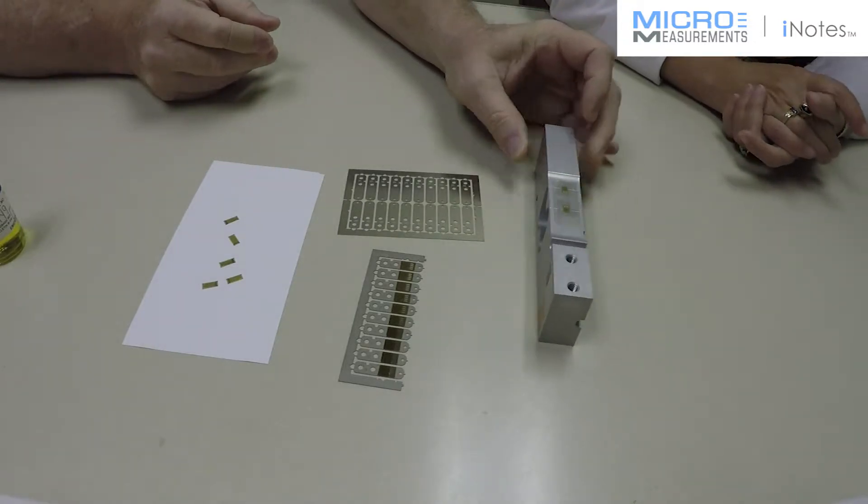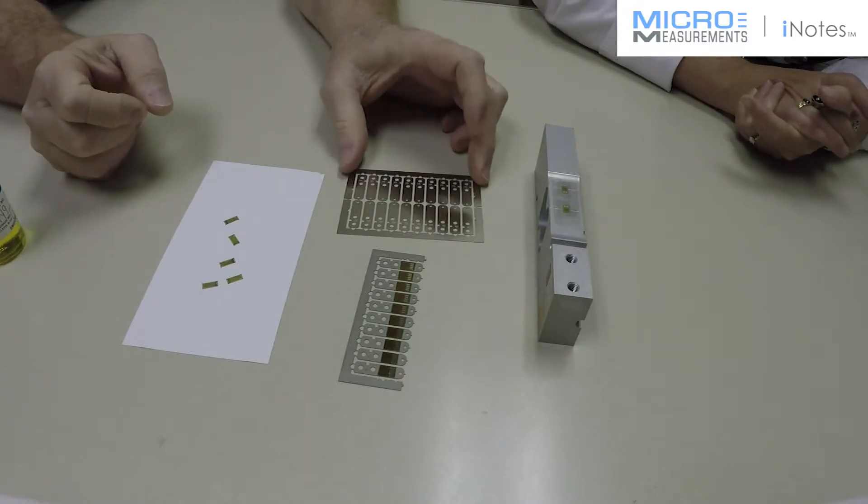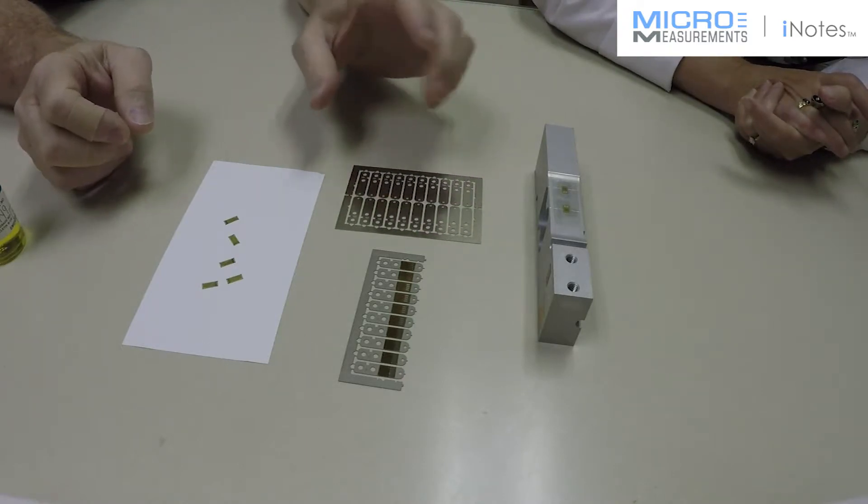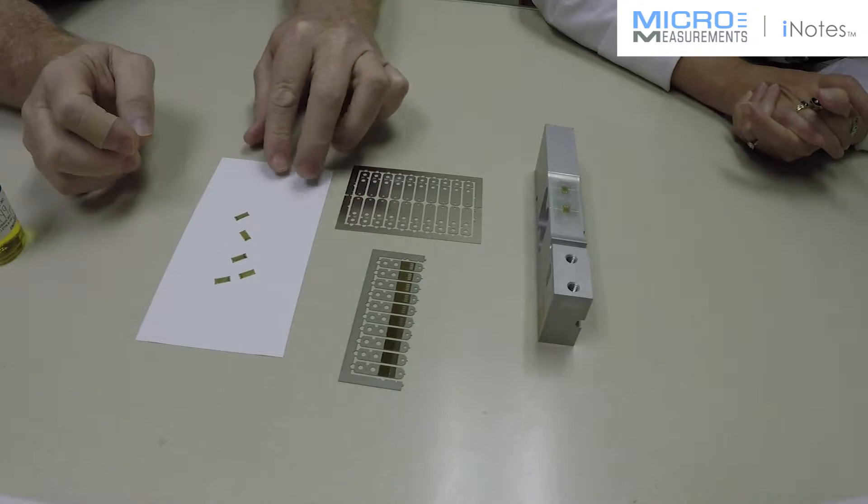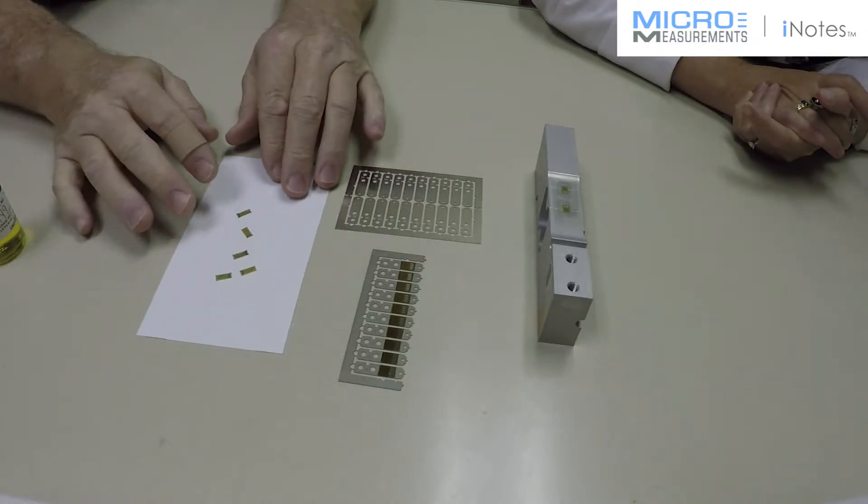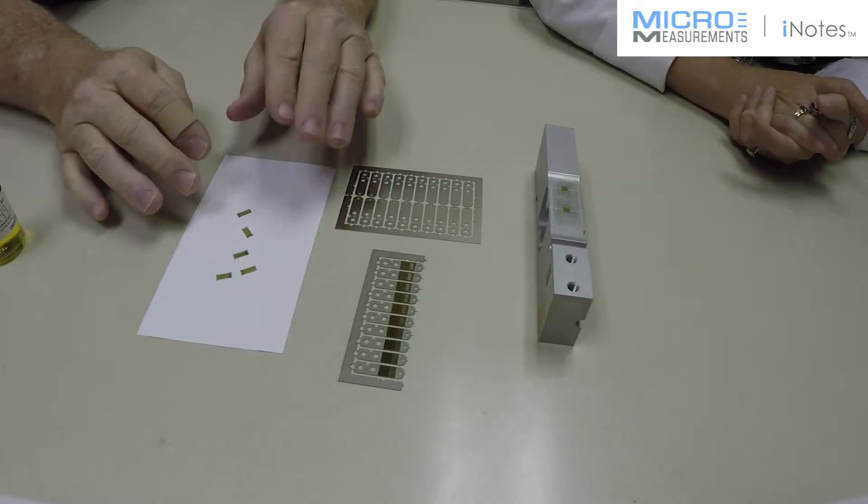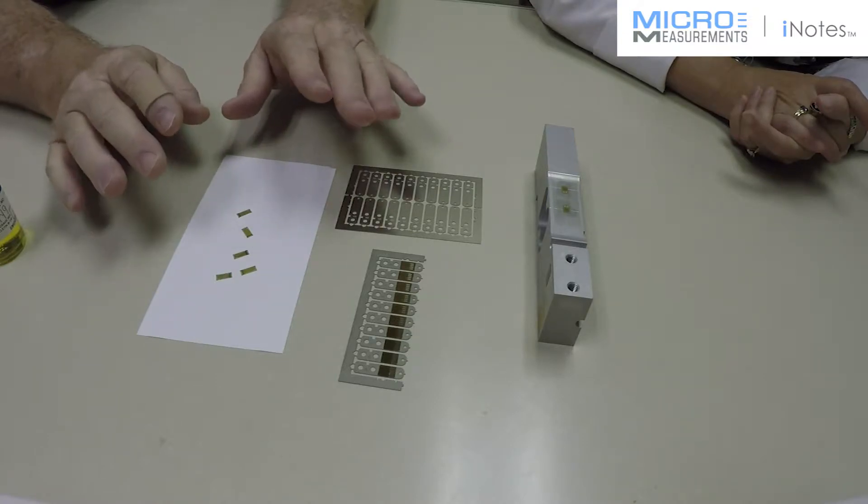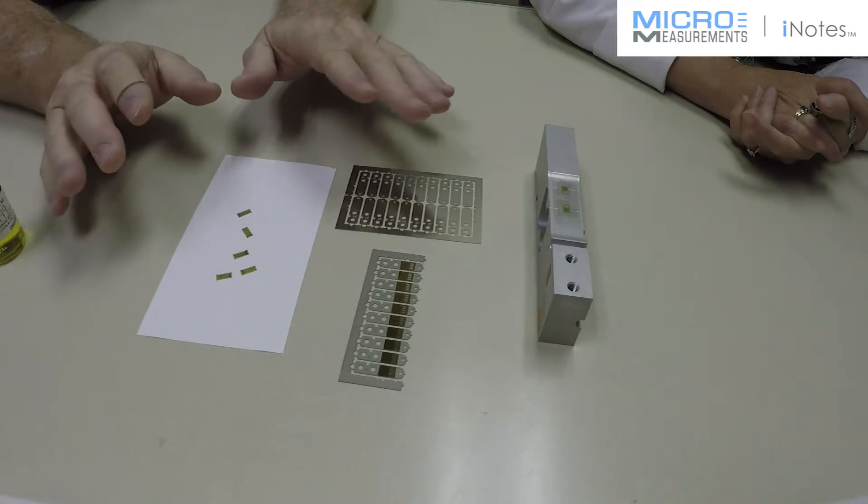But the resin backed gauges take some of this work out of this job. What we do is during the manufacturing process, we apply adhesive to the back of the gauge, then B-stage it,